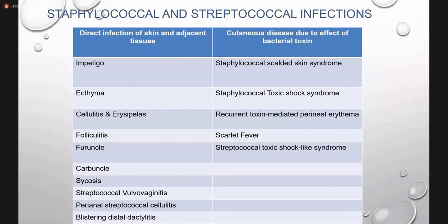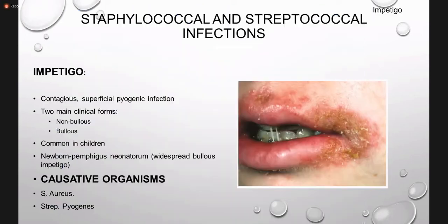Both bacteria cause infection either by direct infection of the skin or by the release of their toxins. By direct infection we have impetigo, ecthyma, cellulitis, erysipelas, folliculitis, furuncle, carbuncle, and sycosis. Due to toxins we have scalded skin syndrome, toxic shock syndrome, and scarlet fever. We will discuss each one by one.